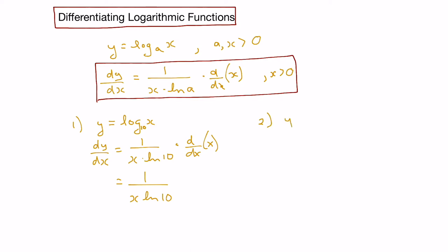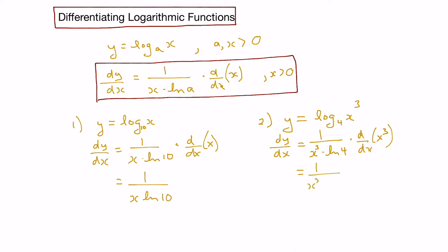Let's look at another example. Let's say we wanted to find the derivative of y equals log base 4 of x cubed. Applying the formula, the derivative would be 1 over x cubed times the natural log of 4, times the derivative of x cubed. That gives us 1 over x cubed ln 4 times 3x squared. Applying the power rule and canceling x's, we end up with 3 over x ln 4.